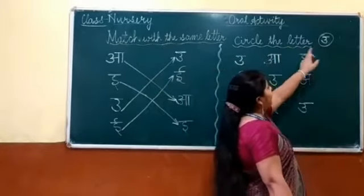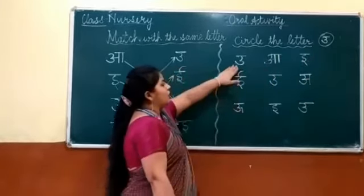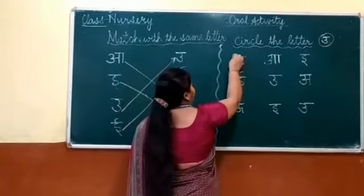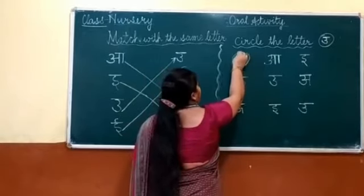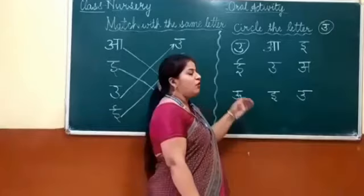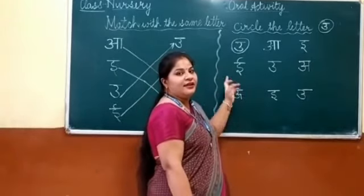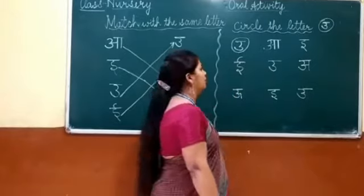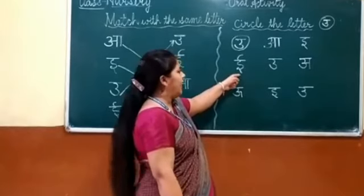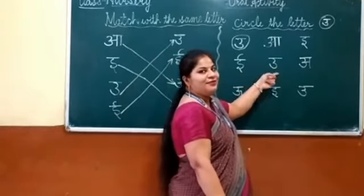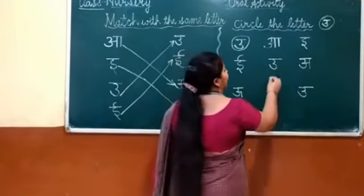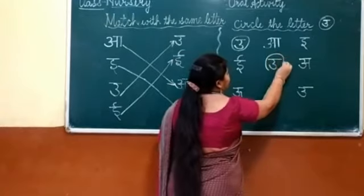See, circle the letter U. Find the letter U and circle it. This is the letter U — Chhoti U, Chhoti U se Ullu. Come on to the next slide. Find the letter Chhoti U. Yes, this is the Chhoti U. And this is the Badi E. Yes, and this is the Chhoti U. Very good! Circle the letter Chhoti U.